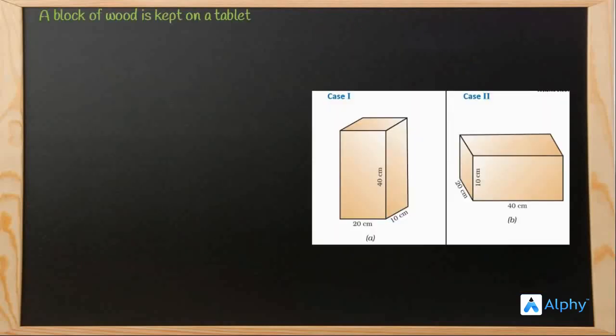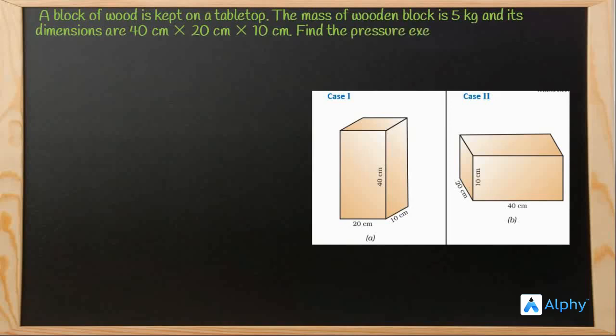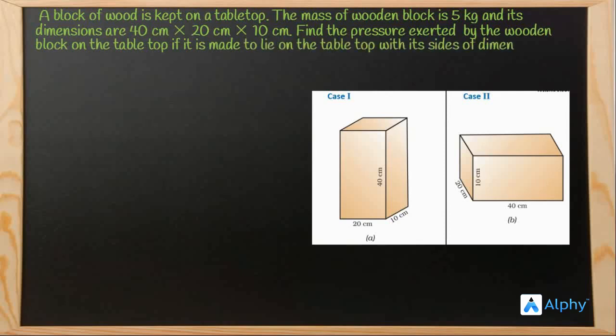A block of wood is kept on a tabletop. The mass of the wooden block is 5 kg and its dimensions are 14 × 20 × 10 cm. Find the pressure exerted by the wooden block on the tabletop if it is made to lie on the tabletop with its side of dimension 20 cm × 10 cm and 40 cm × 20 cm.